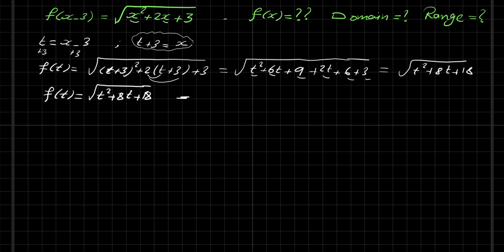And then we can write the function f(x) here, just rename t as x. So f(x) will be equal to square root of x squared plus 8x plus 18. This is the expression for f(x).